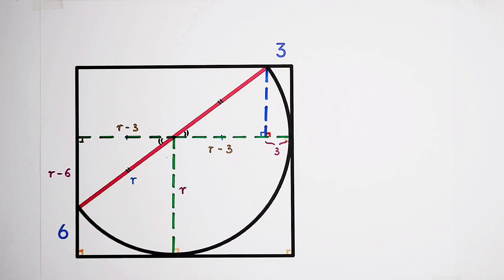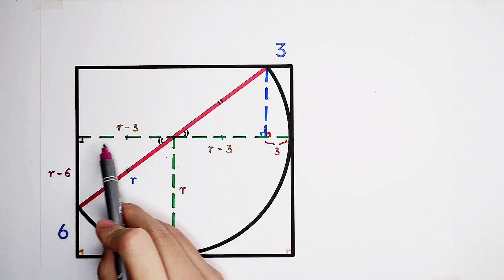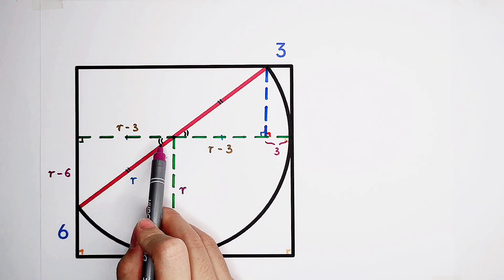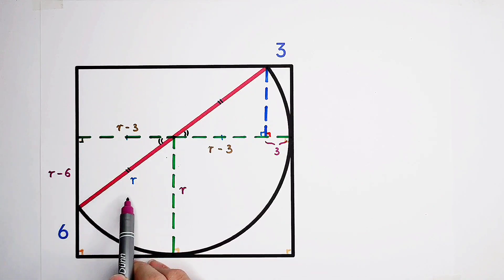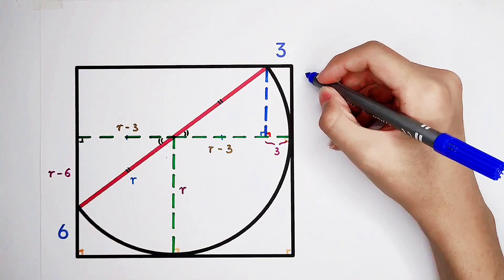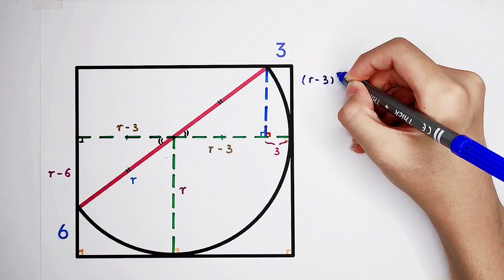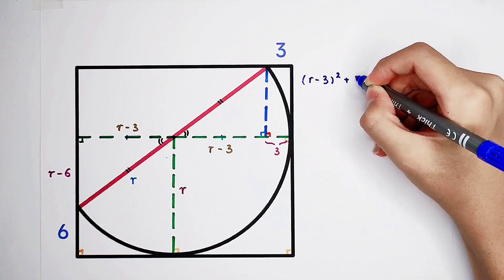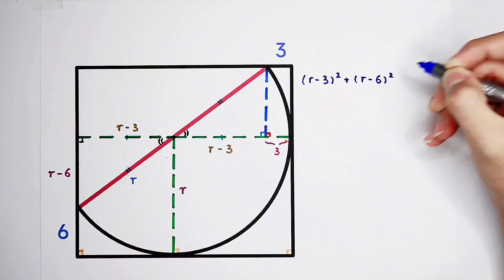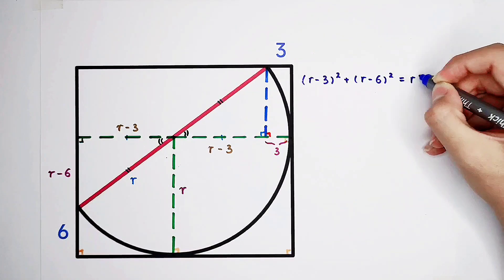So now what we should do is to set up an equation. Construct an equation about r. In this triangle, it is a right triangle. All three sides are known. By the Pythagorean theorem, we can get easily that r minus 3, or squared, plus r minus 6, or squared, is r squared.